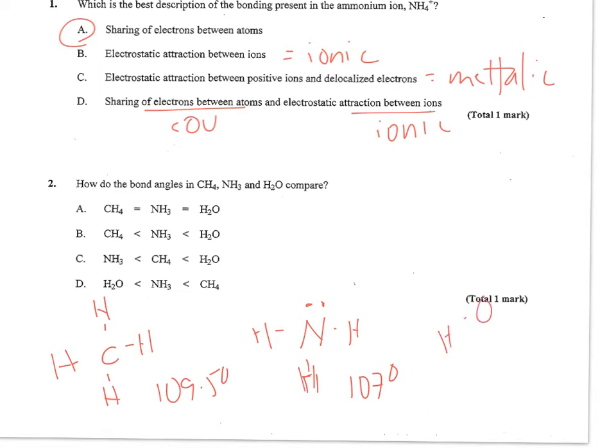And then H2O is also tetrahedral with its electron domains, but it's got two lone pairs. So its bond angle has been squeezed even tighter to 105°. That makes D the correct choice. H2O has the smallest bonding angle, CH4 the largest.